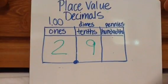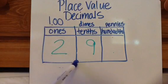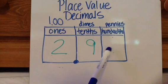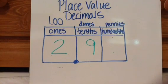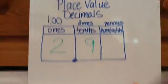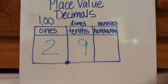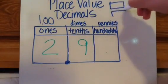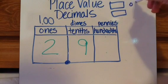Let's look at this one — 2 and 9 tenths. Notice there's nothing in the hundredths place, so I'm not going to get any place value blocks out for that. So 2 ones — it's like two $1 bills, remember we're going to use these. And then 9 tenths: 1, 2, 3, 4, 5, 6, 7, 8, 9 tenths — I have 9 of these sticks. As far as money is concerned, it would be two $1 bills and then 9 dimes.